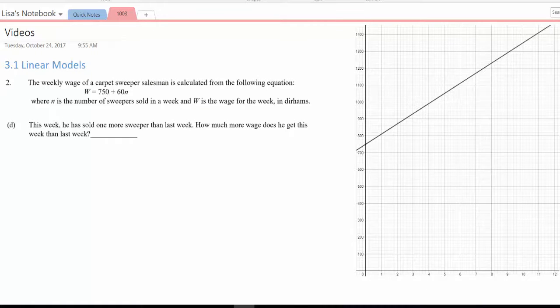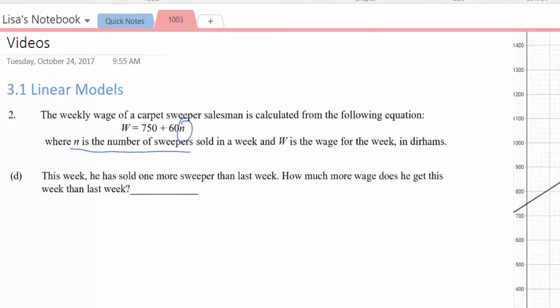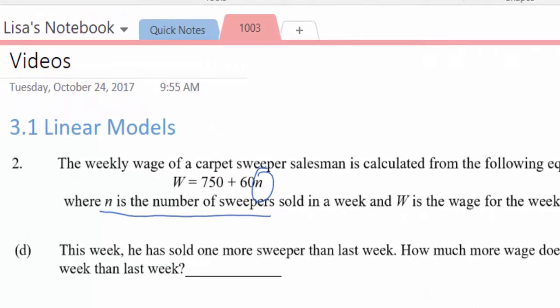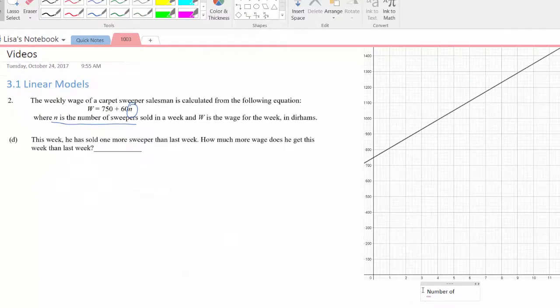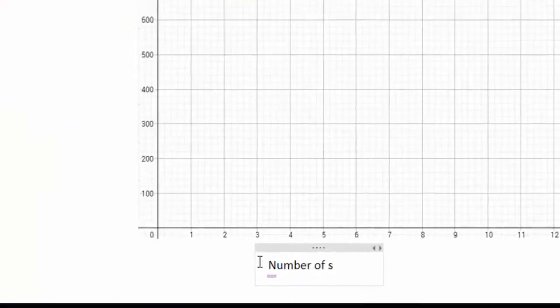To answer question D, I will first have to determine which are my independent values. In this case, my independent values are M, the number of sweepers sold in one week.